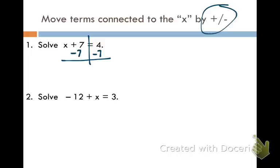On the left side, the plus seven and the minus seven, well, if you add those together they make zero, so those just cancel out. I'm left with just the x over there. And on the right side, four minus seven is negative three. So there's my answer.